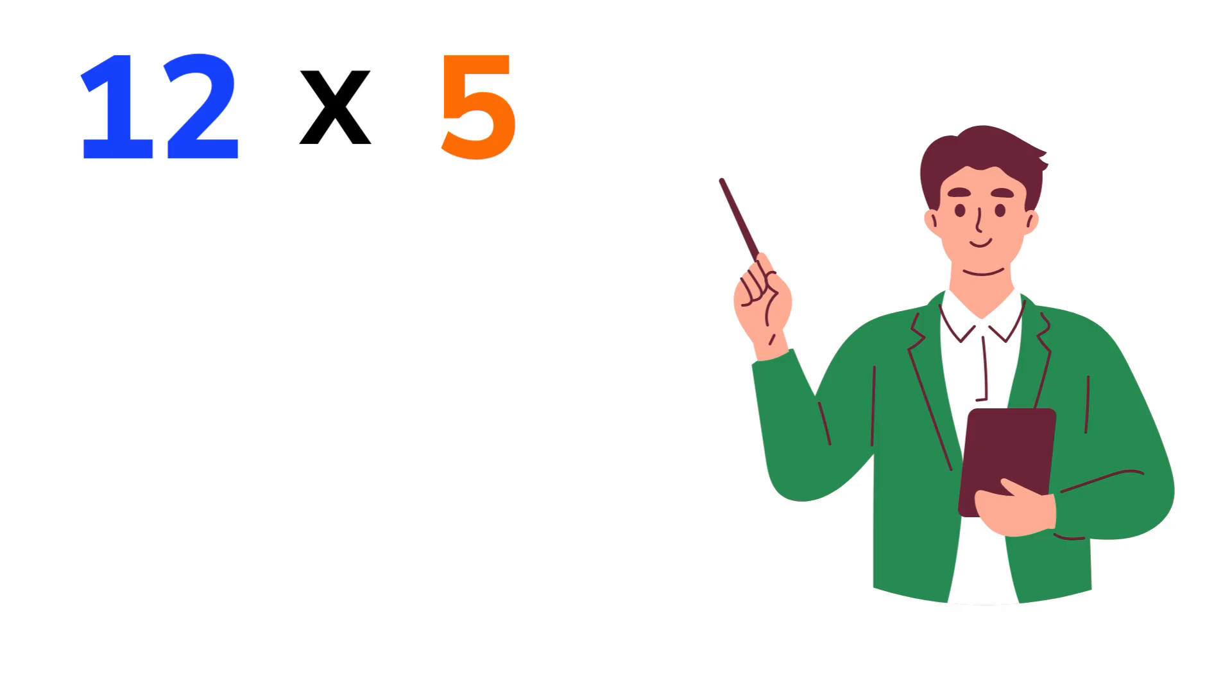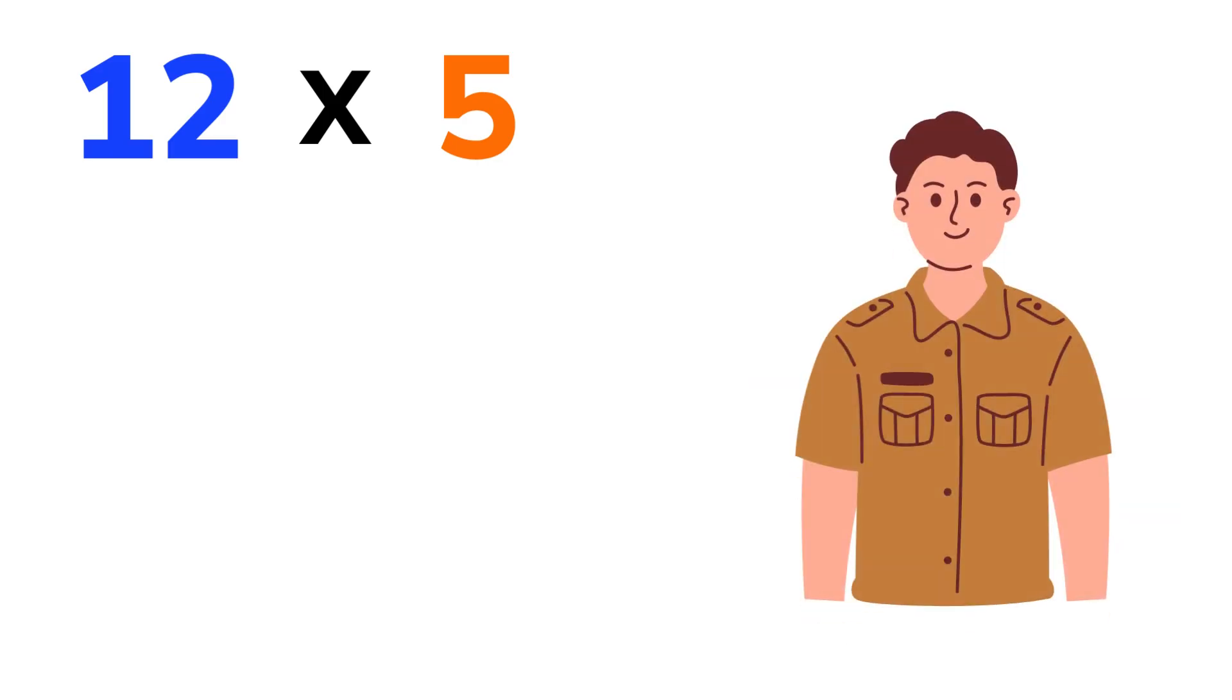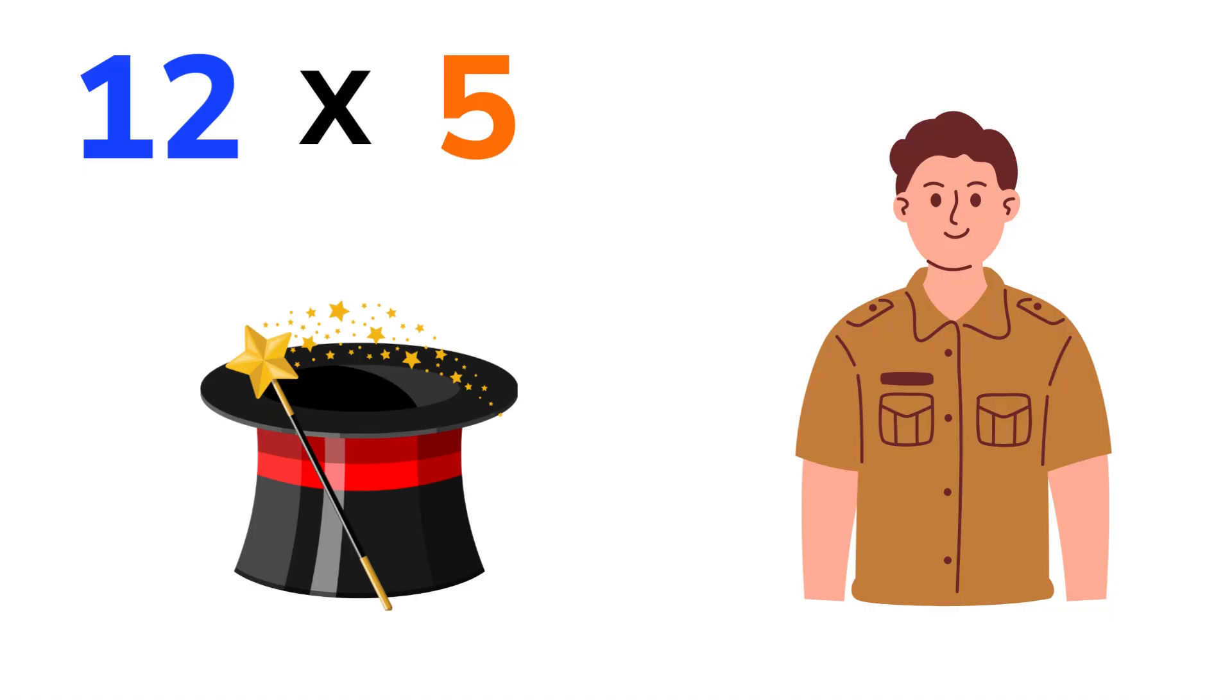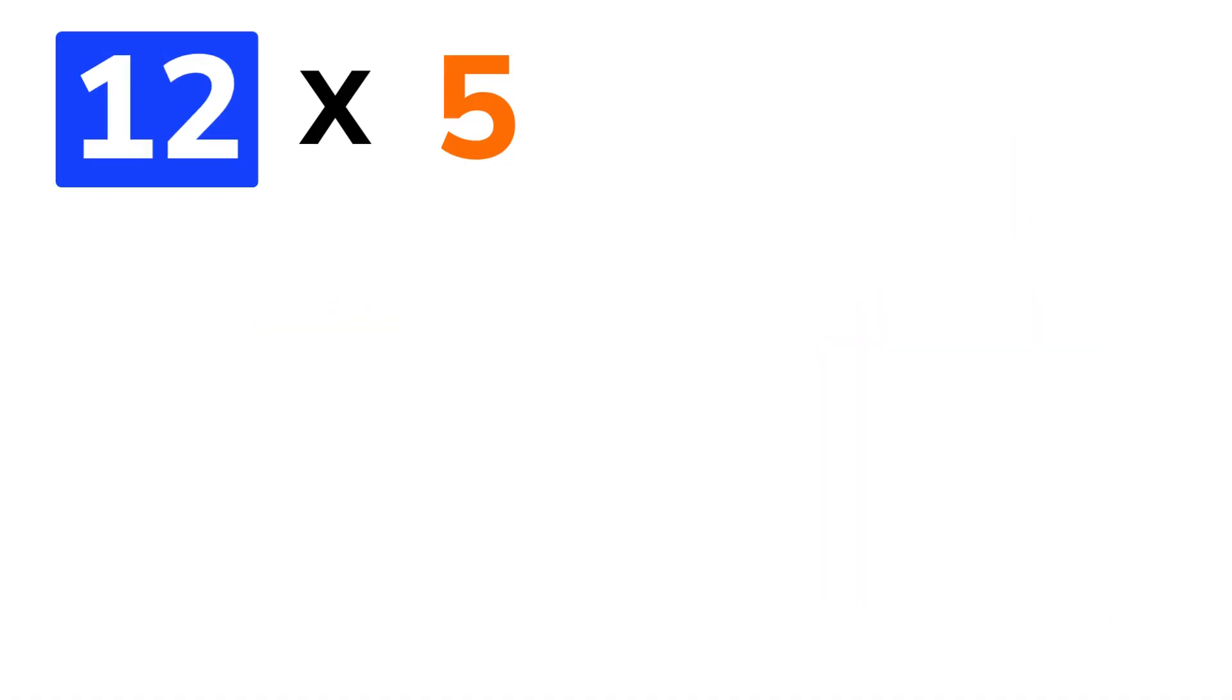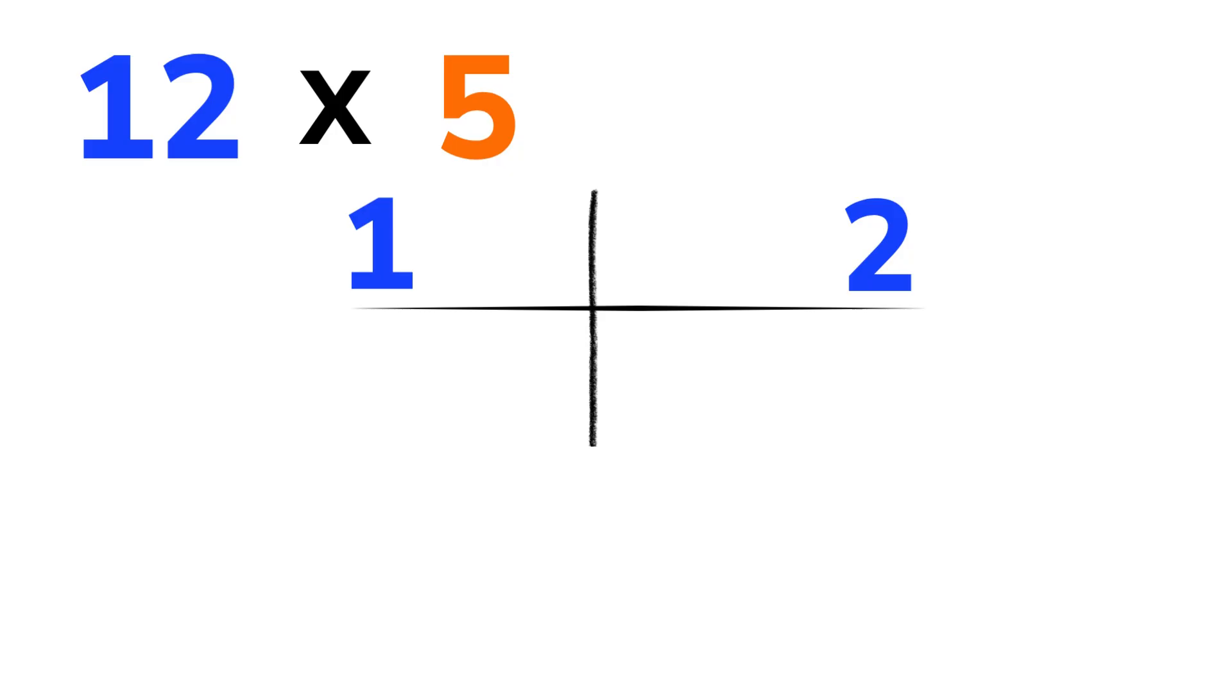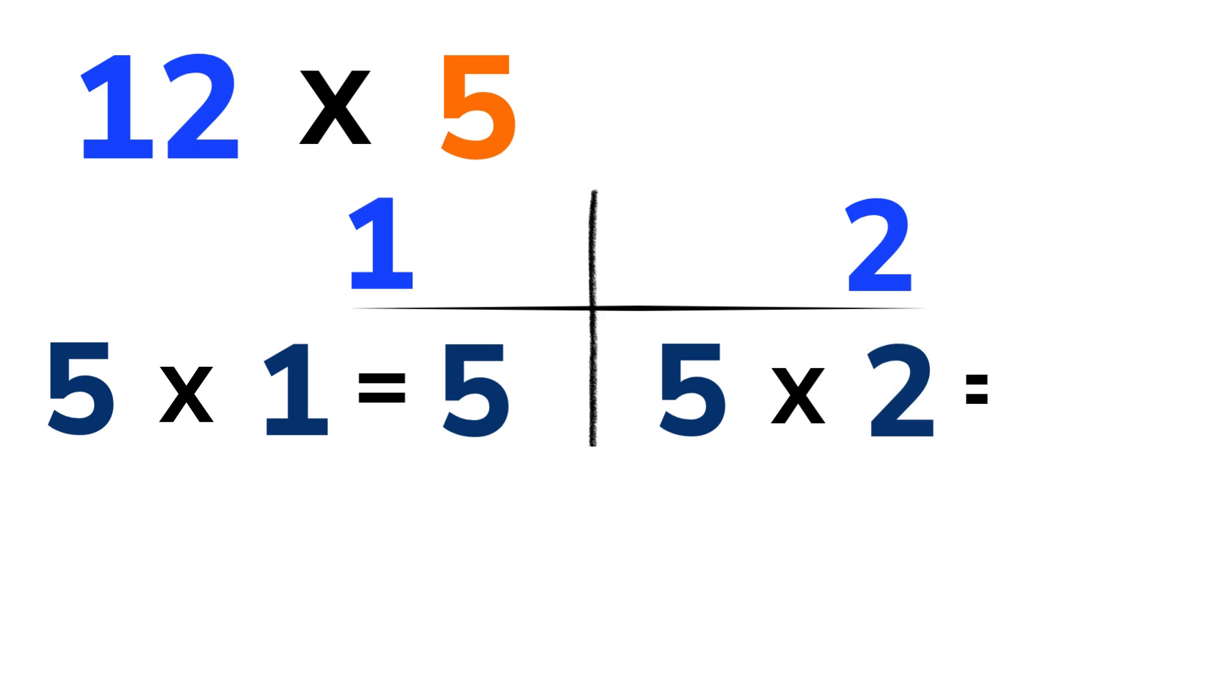Let's take 12 times 5 as our first example. You probably know it already, but let's see how our secret works. Think of 12 as two parts, 1 and 2. Here, 1 is the 10s digit, and 2 is the unit digit. Now multiply both of these digits by 5. So 5 times 1 is equal to 5, and 5 times 2 is equal to 10.